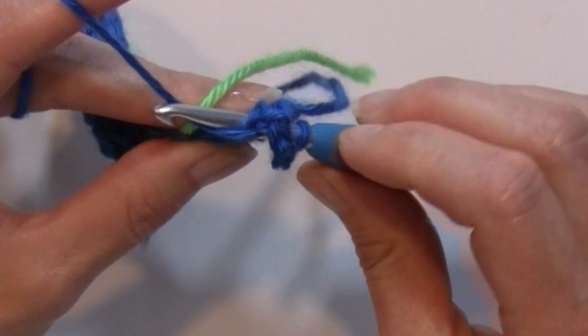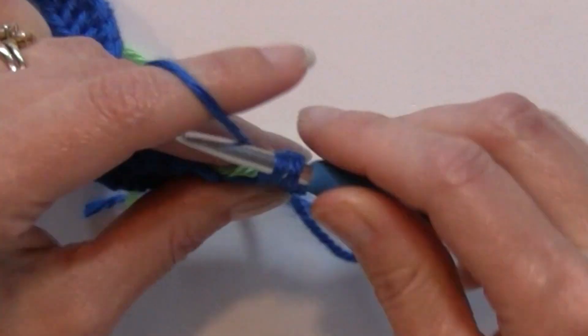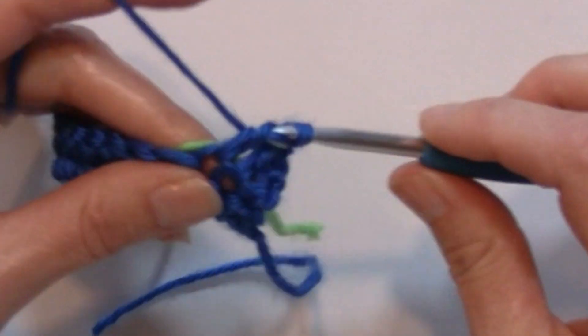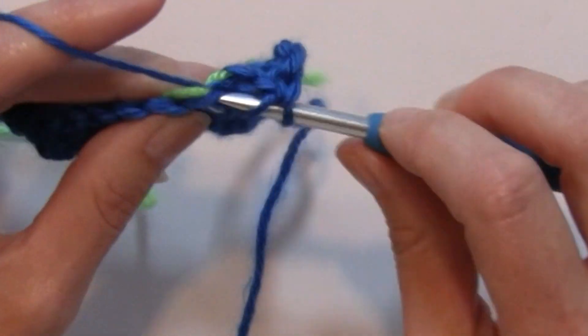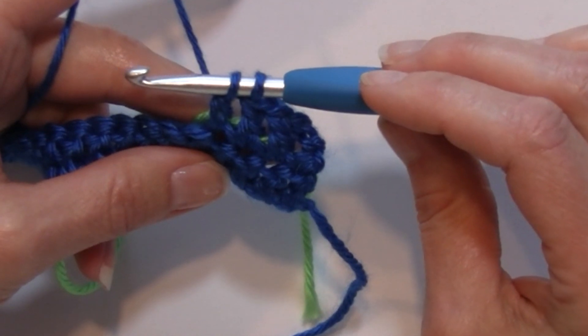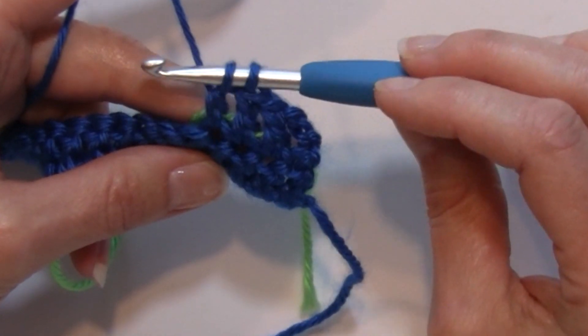I'm going to be working a double crochet in those next three stitches and you'll notice that I'm working over that yarn that I'm carrying. When I get to the place where I've worked those next three stitches, I want to work a popcorn stitch in my next stitch.